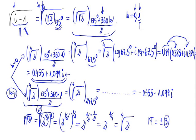We can use the formula from before, but doing it this way is much easier. The square root has two results: the first one we obtained, and the same number but with a minus sign.